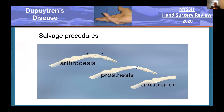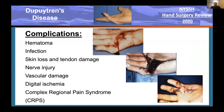When contractures are not corrected by joint release and fasciectomy, salvage procedures include arthrodesis of the PIP joint, a PIP prosthesis, or amputation. I've done arthrodesis successfully in cases with two, three, or four recurrences. Amputation I've only had to do once. Complications with surgery include hematoma, infection, skin loss, tendon damage, tendon rupture, nerve injury, vascular damage, digital ischemia, need for amputation, and complex regional pain syndrome. This is often a straightforward procedure, but it can be extremely complex—you must understand the potential problems before tackling each case.